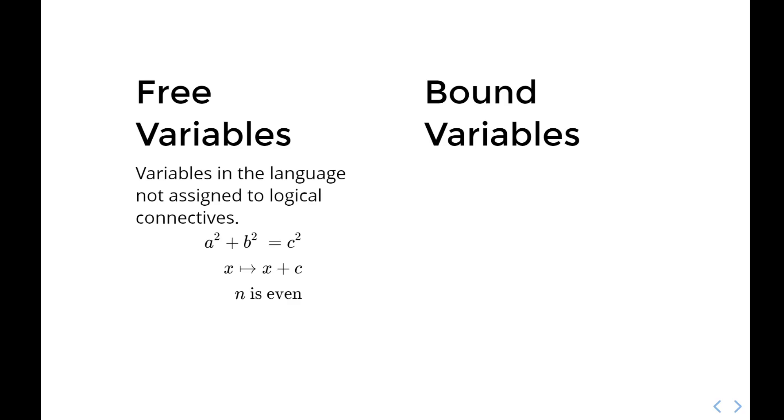In the sentence n is even, we again cannot decide if n is even or not. We don't know because we've given no context clues about n. We need a logical connective. For every n is n even. For some n is n even. Those would be enough. But as it stands, the letter n is a free variable.